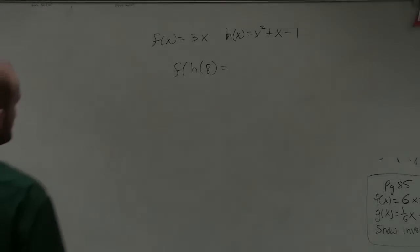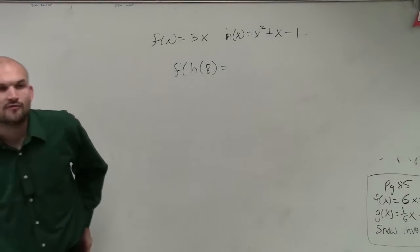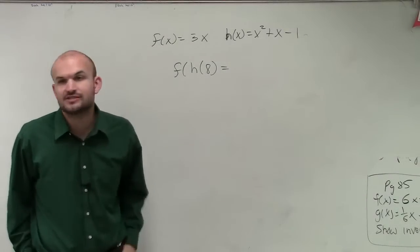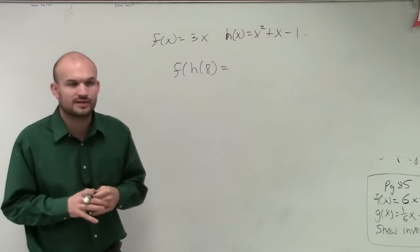Two different ways to look at this, all right? First of all, this is saying f of h of 8. So there's two different ways I want to look at this.